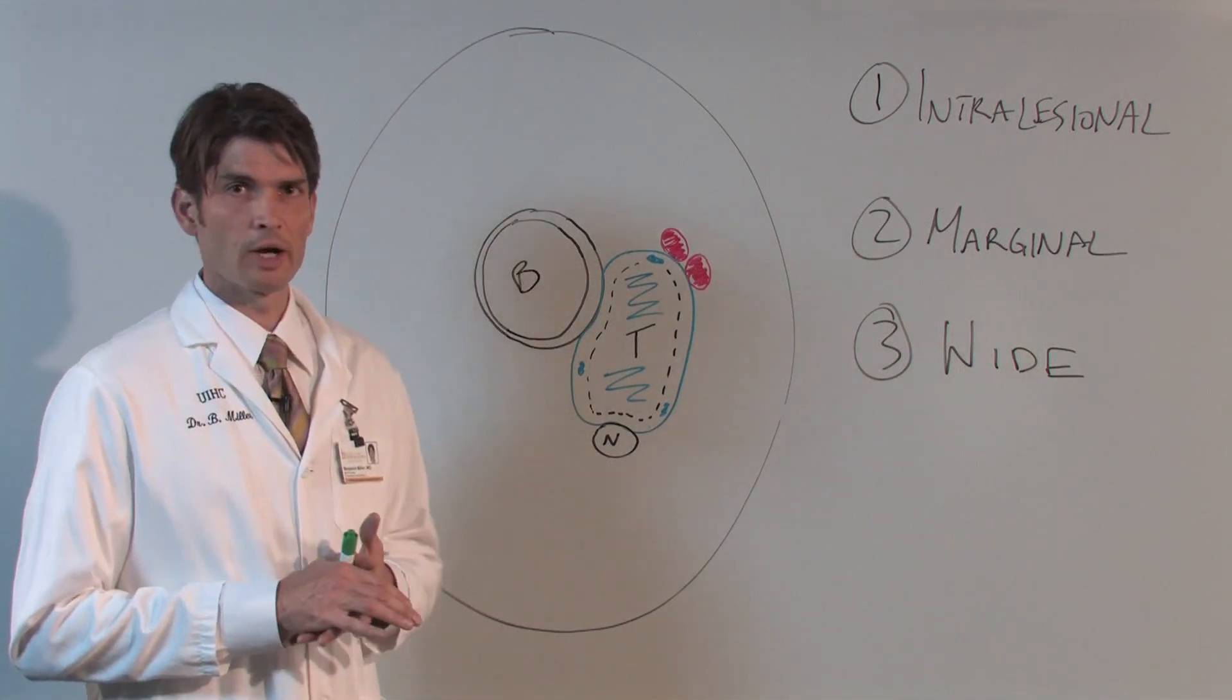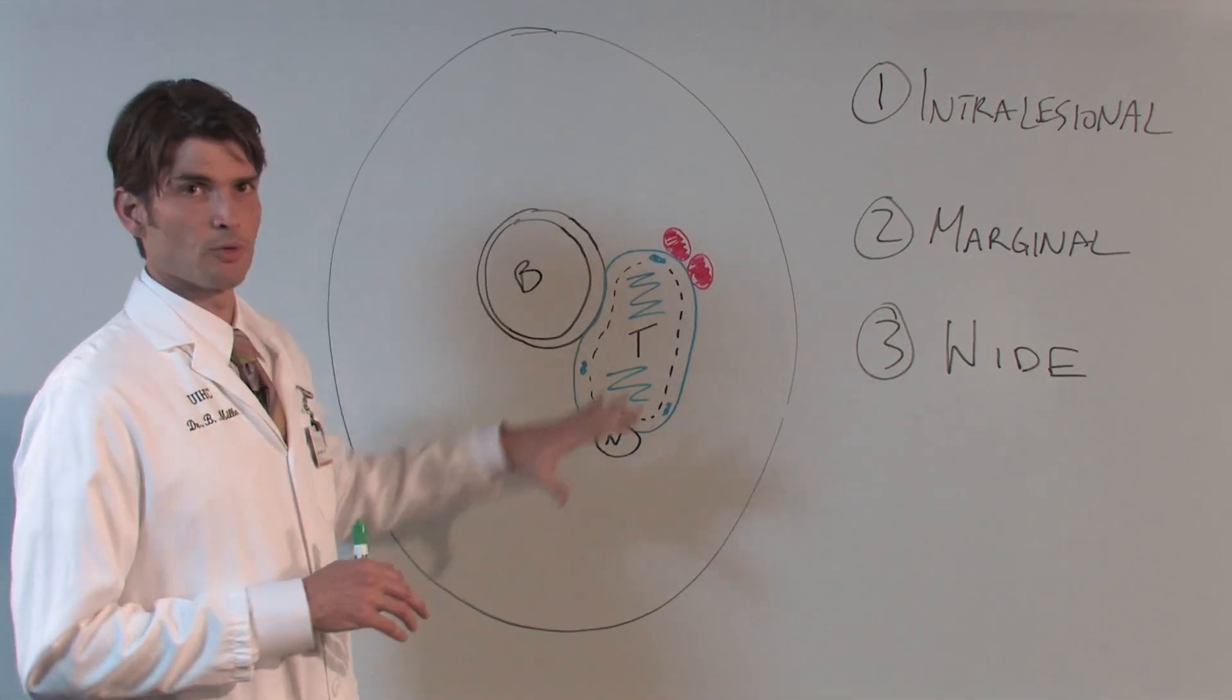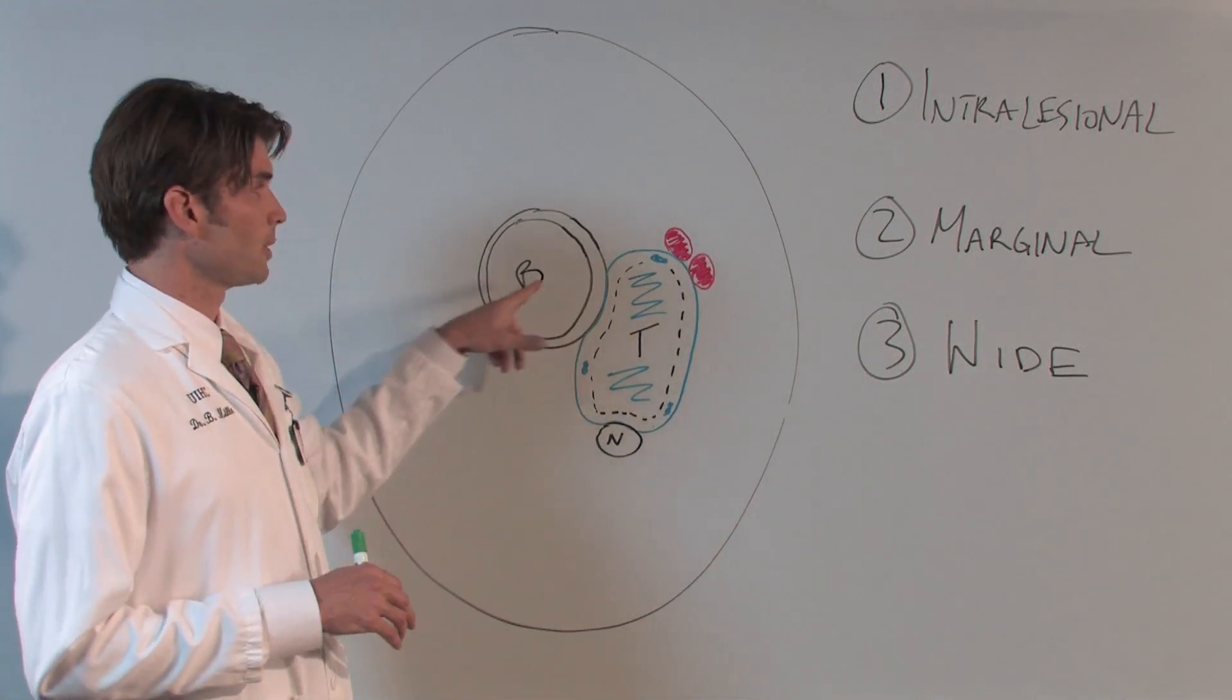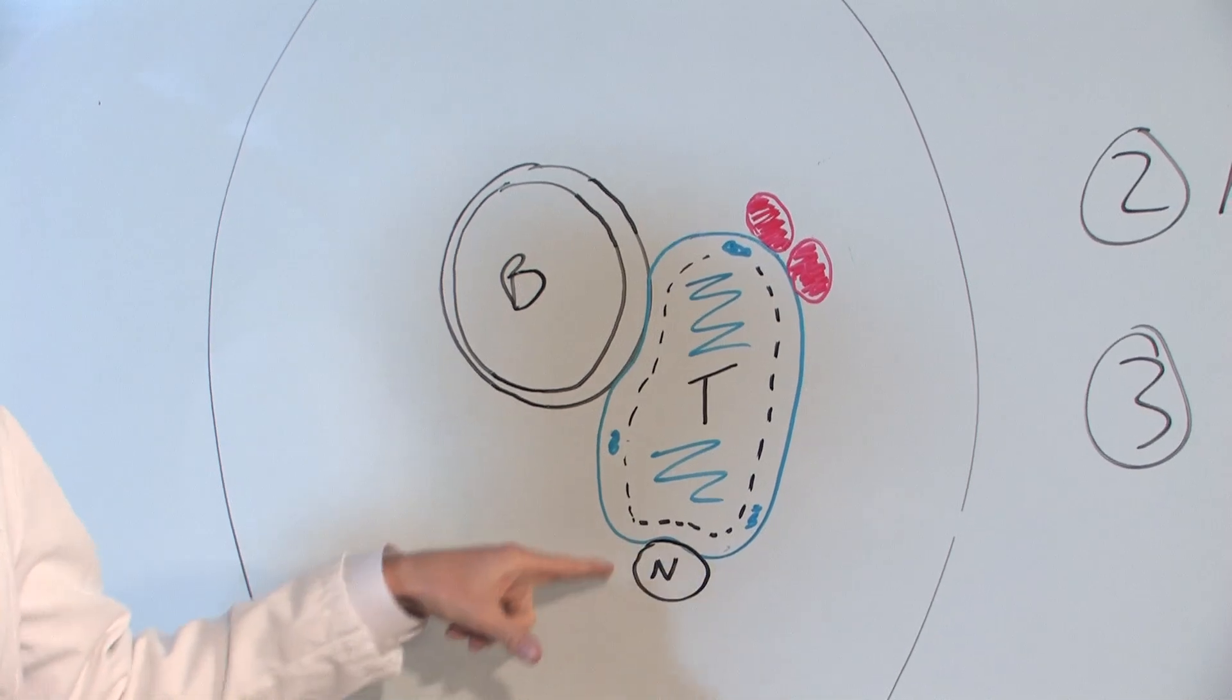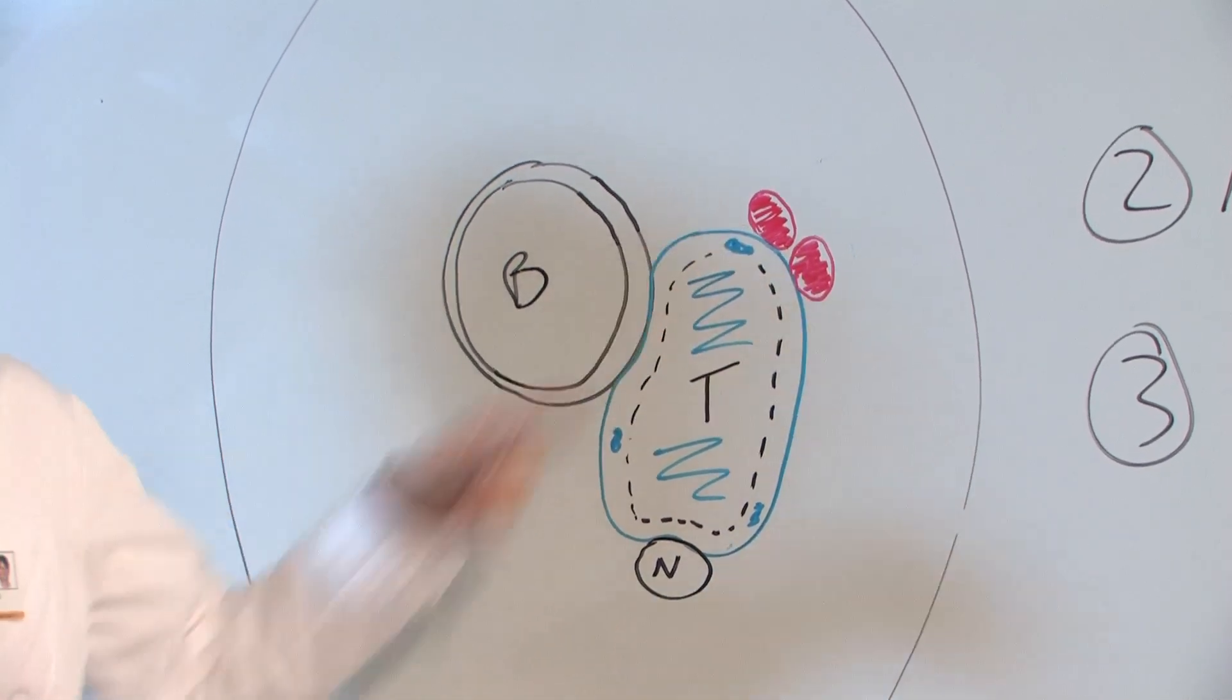I'm going to be going to this diagram a little bit. Basically what this represents is any portion of the extremity. This deepest structure would represent the bone, this large structure here the tumor, this over here the nerve, and these over here blood vessels.